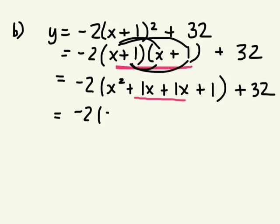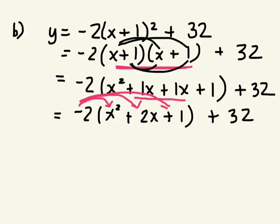I can simplify what's in my bracket because I have like terms. 1x plus 1x is 2x. Still not touching this plus 32. Now I have to distribute this negative 2. Multiply it by everything inside the bracket only. So what's negative 2 times x squared? Negative 2 times positive 2x. Negative 2 times positive 1 plus 32.